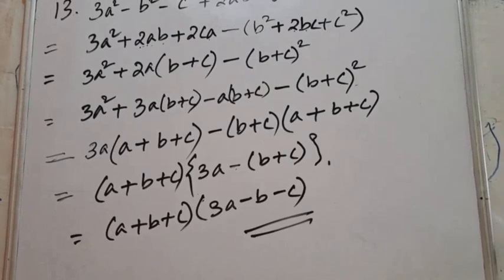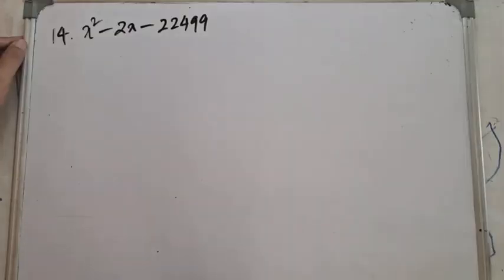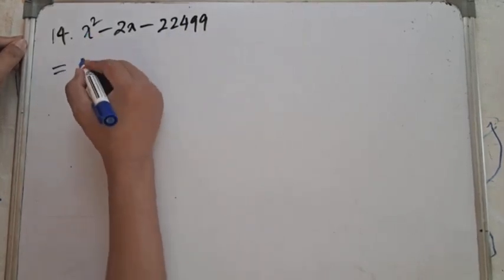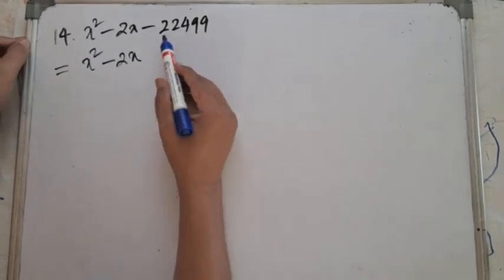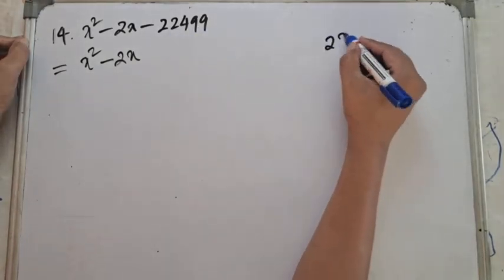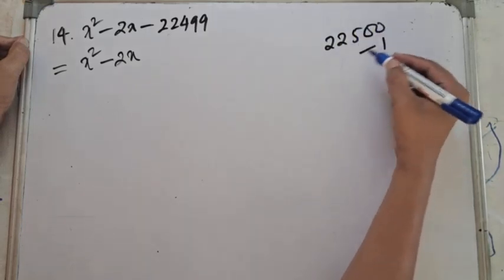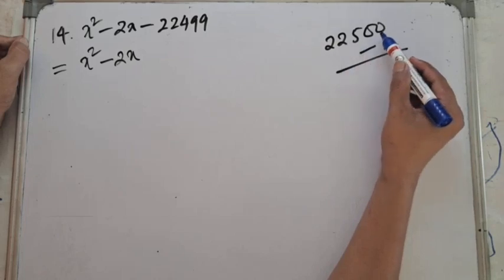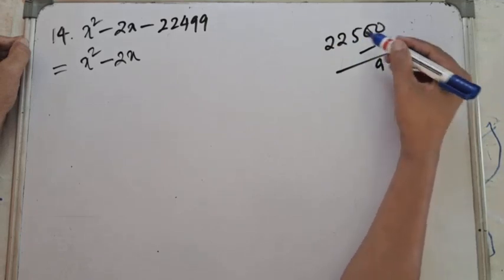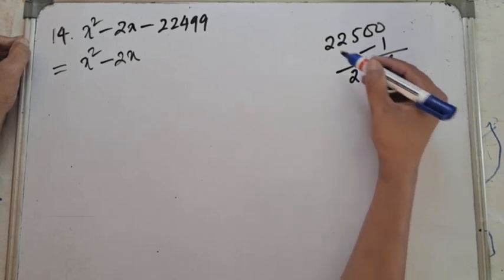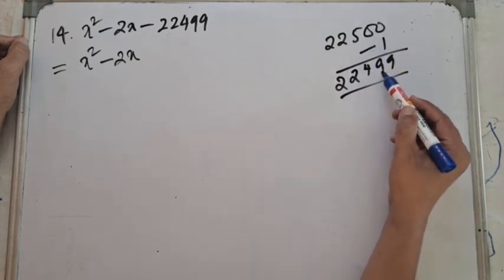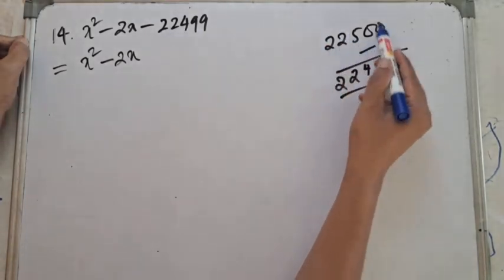Now let's do question number 14. The expression is x² - 2x + 22,499, and we are asked to factorize it. We notice that 22,499 can be written as 22,500 - 1, because 22,500 - 1 = 22,499.